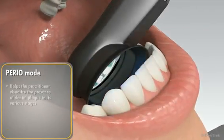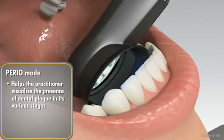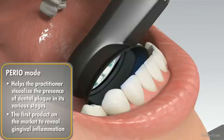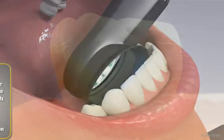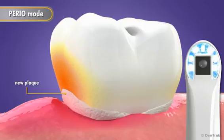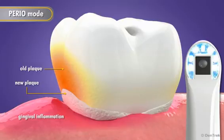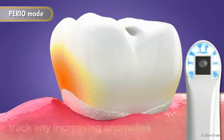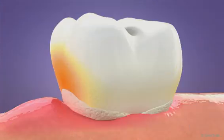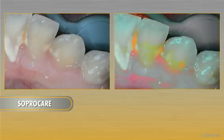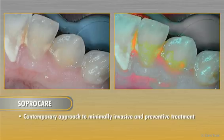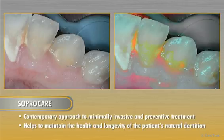In perio mode, SOPROCare helps the practitioner visualize the presence of dental plaque in its various stages and is the first product on the market to reveal gingival inflammation. New plaque is highlighted by its white and grainy characteristics, and old plaque is revealed as shades of yellow and orange. Gingival inflammation is indicated ranging from pink for mild inflammation all the way to deep magenta for severe inflammation. Perio mode not only reveals plaque and gingival inflammation but also allows the dental professional to track any increasing anomalies, guiding a more contemporary approach to minimally invasive and preventive treatment.